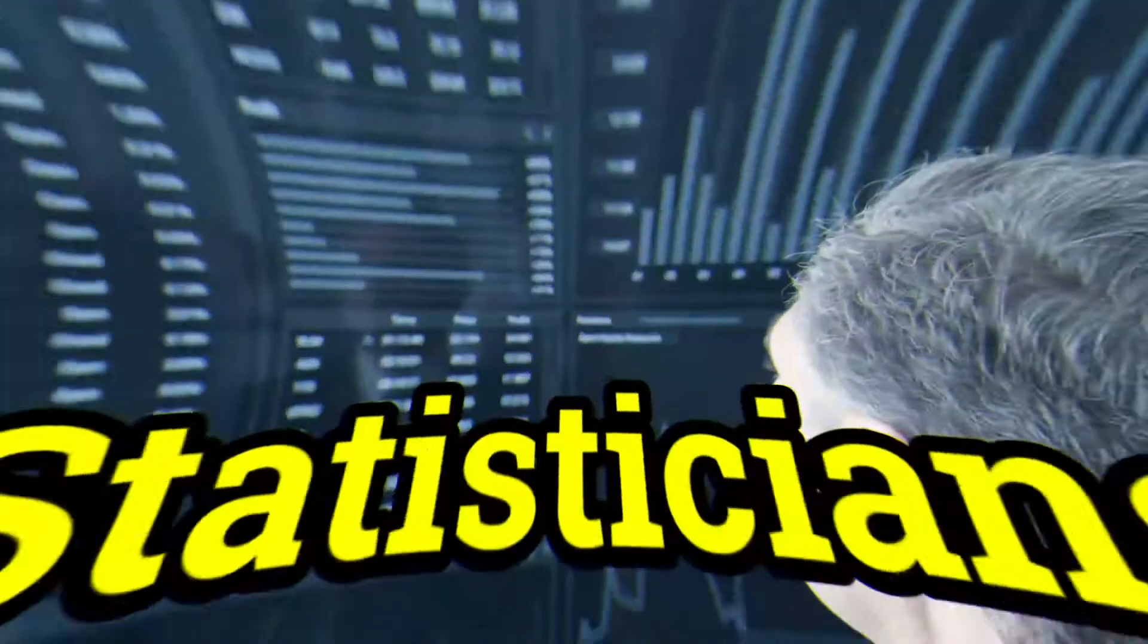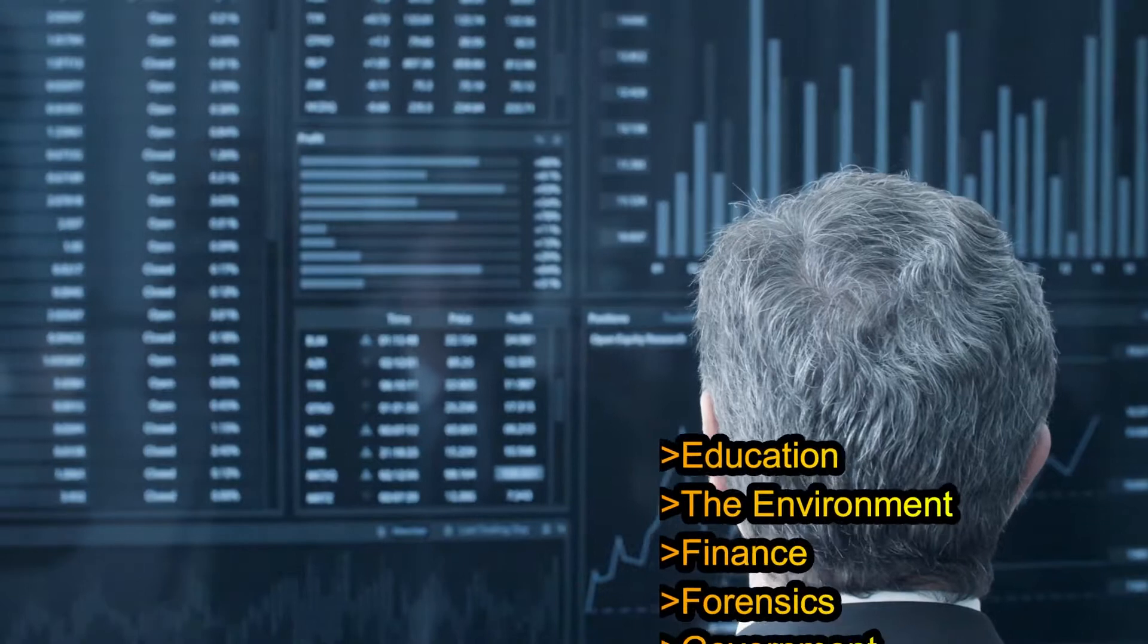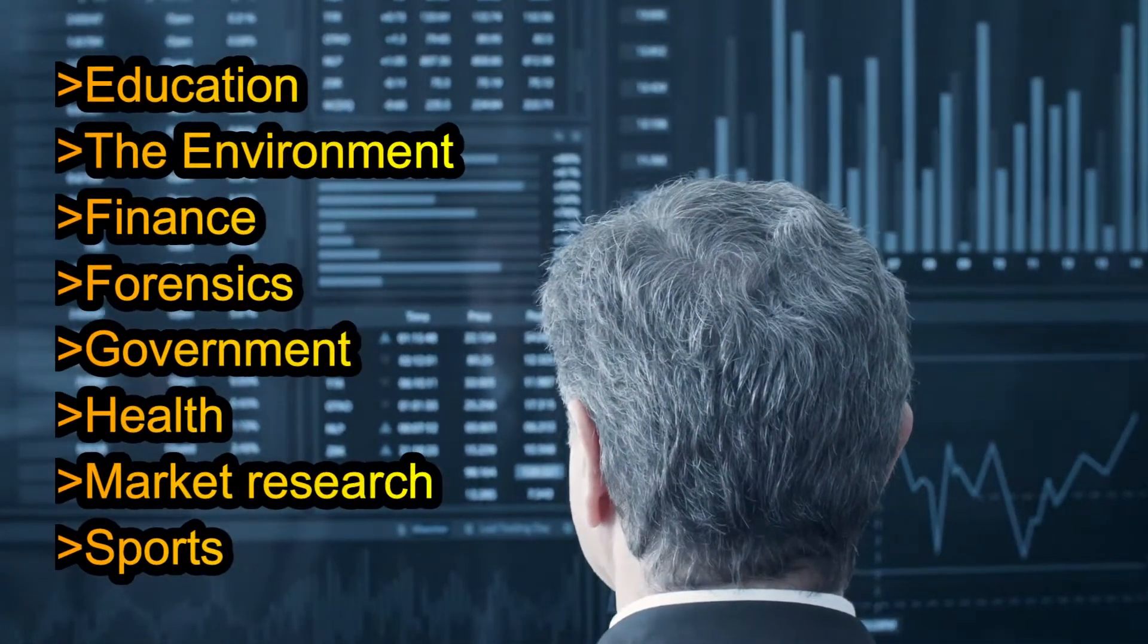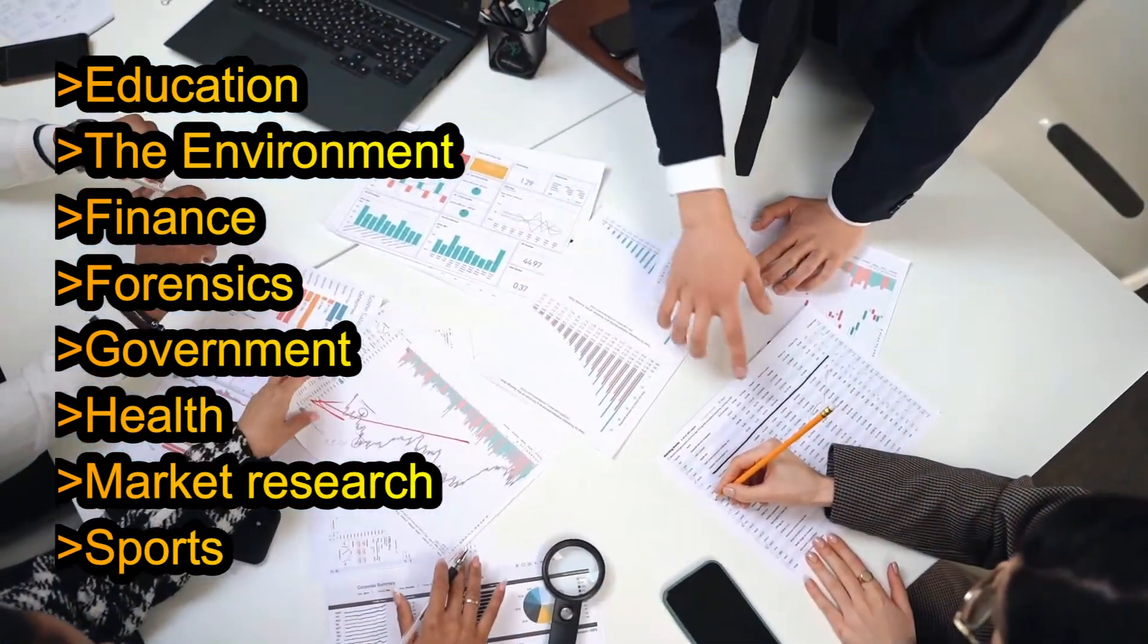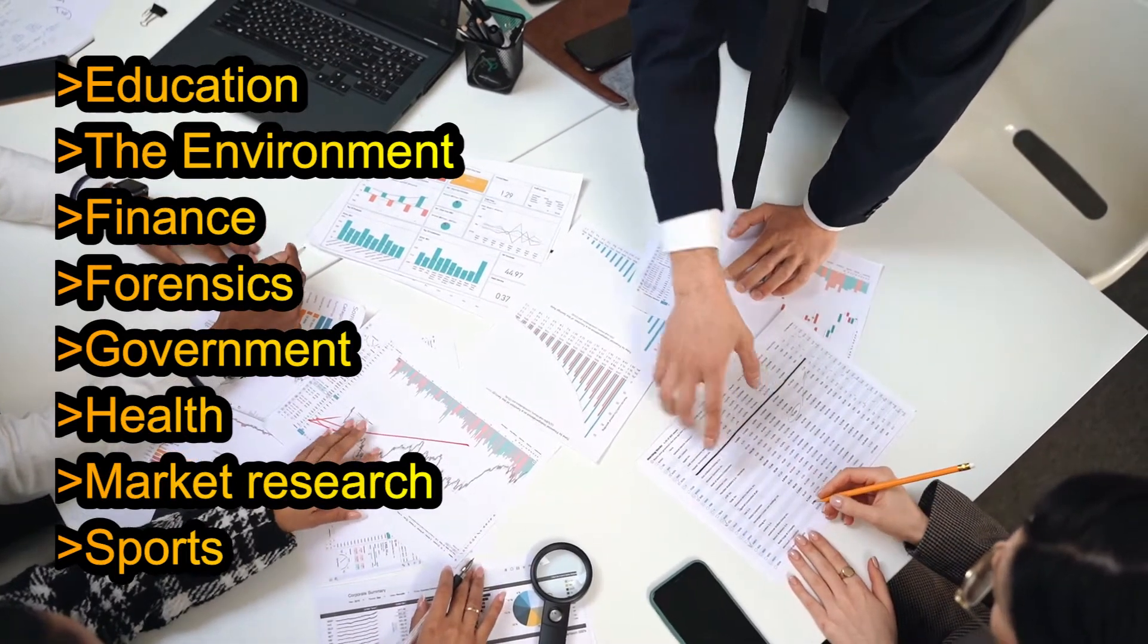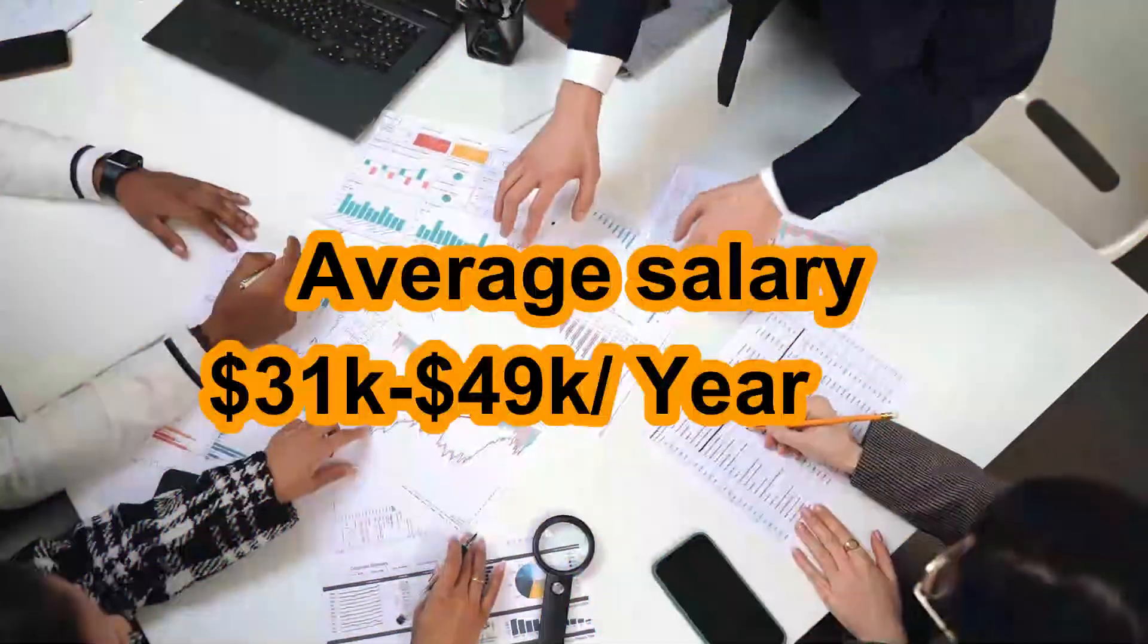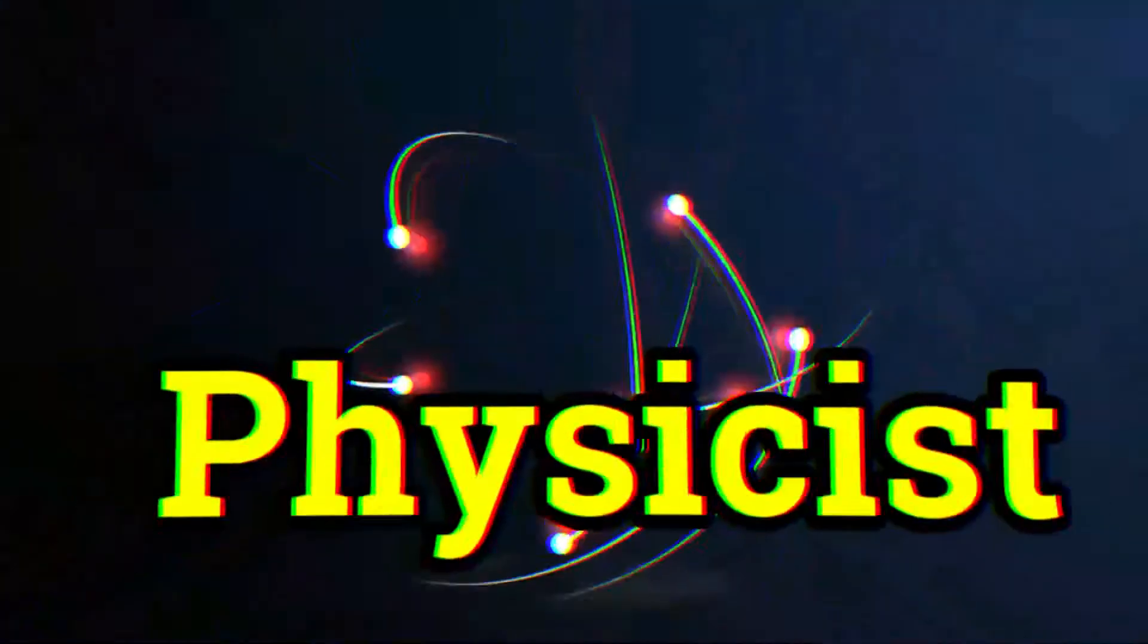Number six, you can work as a statistician. Statisticians are concerned with collection, analysis, interpretation, and presentation of quantitative information. They work in a range of sectors such as education, the environment, finance, forensics, government, health sector, market research, and sports sector. Average salary is around $31,000 to $49,000 per year.